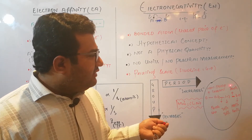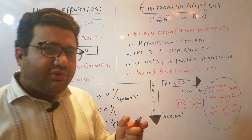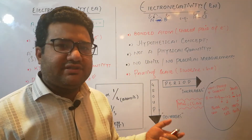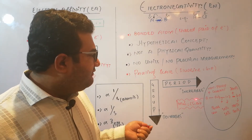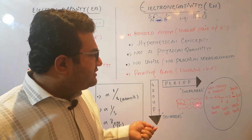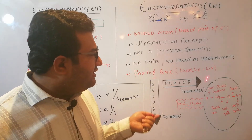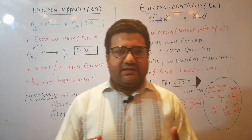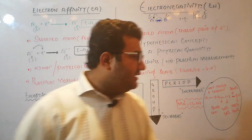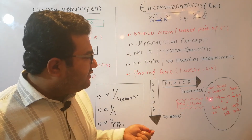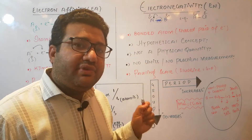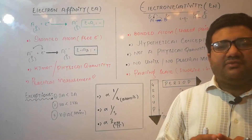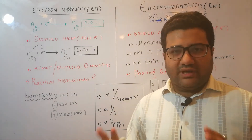For a bond to be 100% ionic, the electronegativity difference must equal 4, which is not possible in practice. Since the minimum electronegativity in the periodic table is 0.7 and the maximum is 4, the maximum possible difference is 3.3. That is why no bond in nature is 100% ionic. However, a bond where the electronegativity difference is 0 is 100% covalent. So a 100% covalent bond exists, but a 100% ionic bond does not exist in nature.